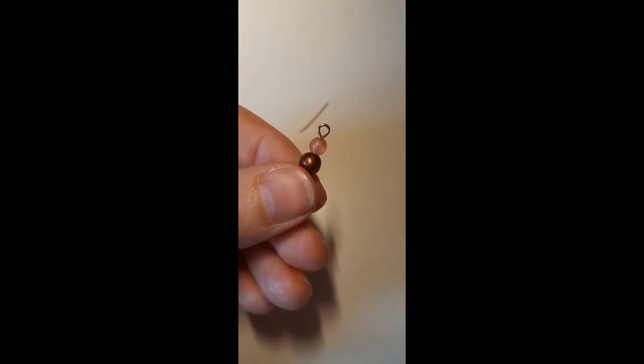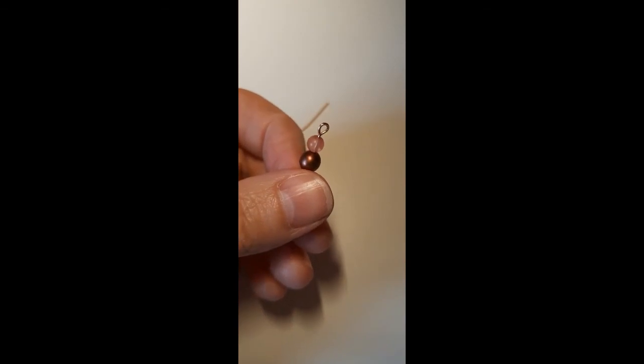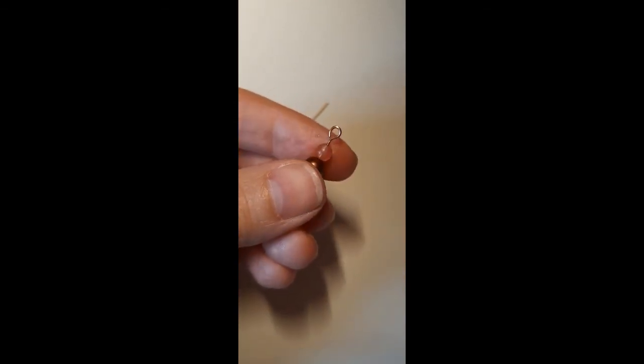There you have it, that is your loop at the end of your head pin, your closed loop. Now I'm going to show you in another video how you open and close a jump ring so that you can attach your earring wire to this. Thank you.